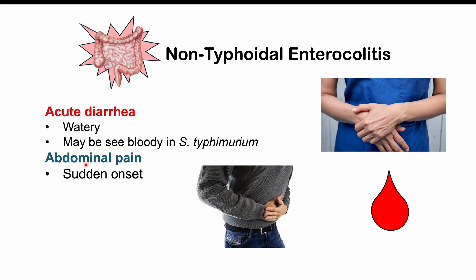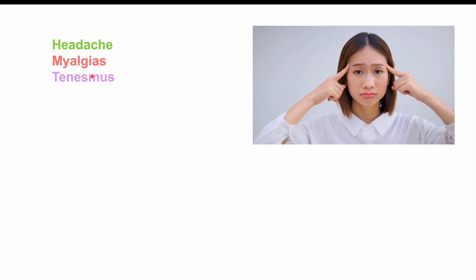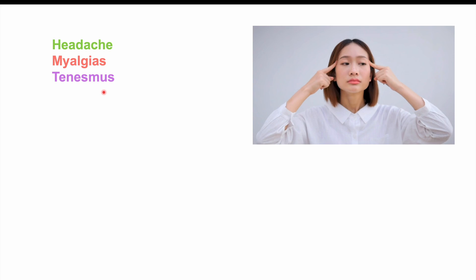We can also see abdominal pain — often sudden onset and cramping — along with fever and headache. Myalgias, or muscle aches and pains, can also occur. In more severe cases, tenesmus may be present, which is a feeling that you need to have a bowel movement but don't actually. Dehydration can also occur, especially with a lot of watery diarrhea.